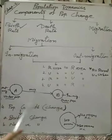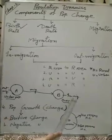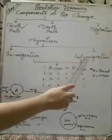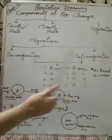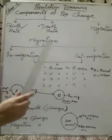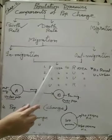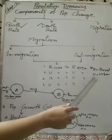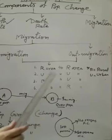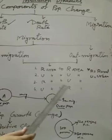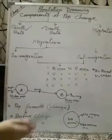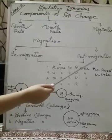In-migration leads to overpopulation and out-migration leads to underpopulation. These are the two types of migration. Whatever the type, migration can take place in four different areas: rural to rural, urban to urban, rural to urban, or urban to rural.